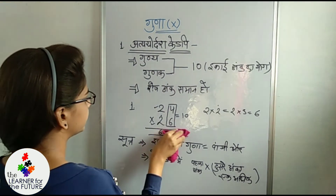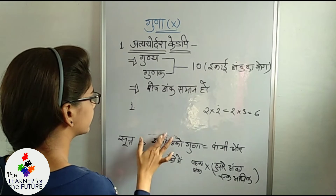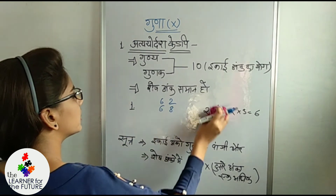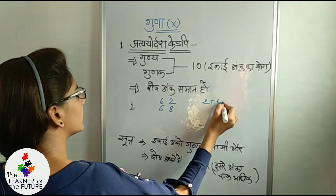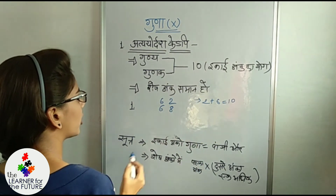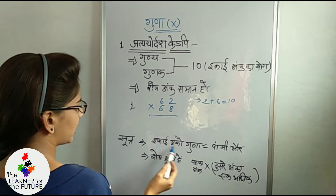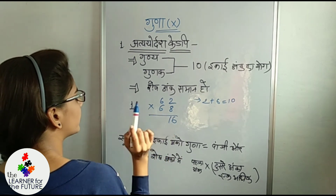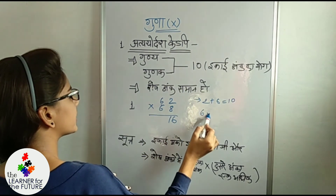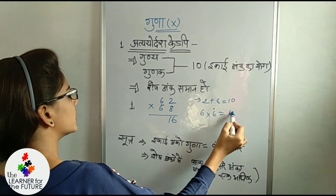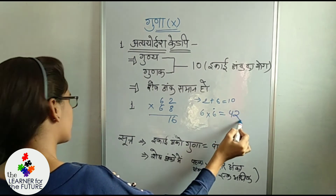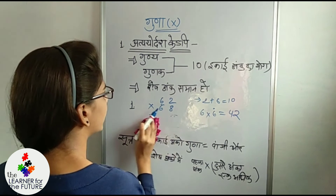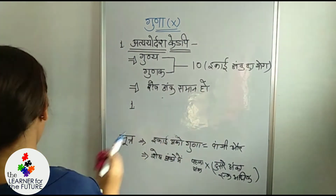Let's take another example: 62 and 68. Here the unit digits are 2 and 8. First, we check their sum — it is 10 — and the remaining digits are the same, so we can apply this formula. The unit digits multiply to give 16, and 6 into 7 gives 42, so the answer is 4216.